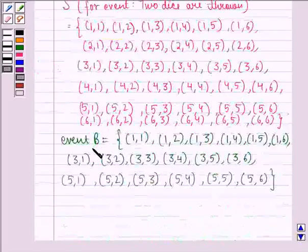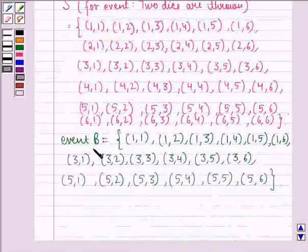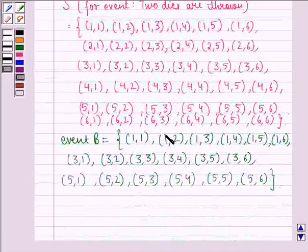Now event B was given to us as getting an odd number on the first die. So here we have odd number on the first die. This is the sample space for event B.